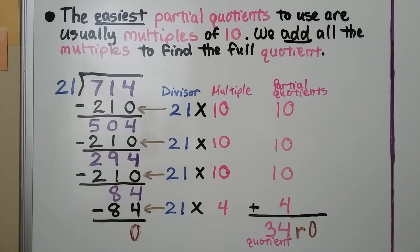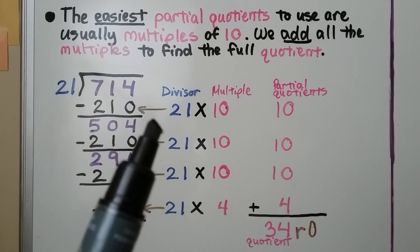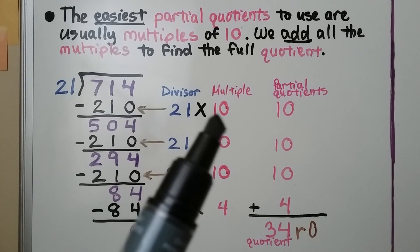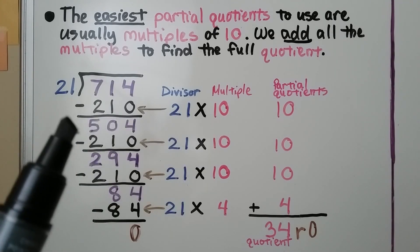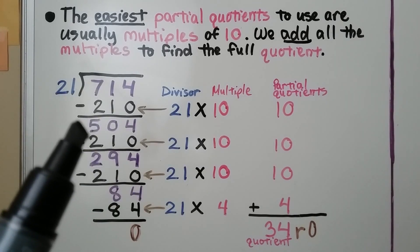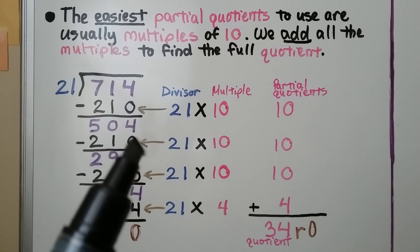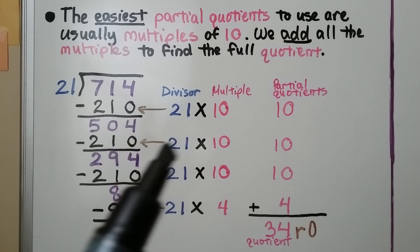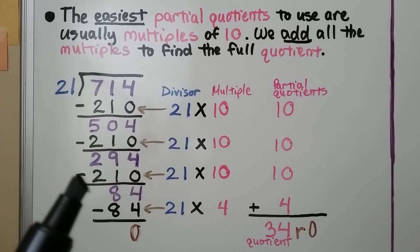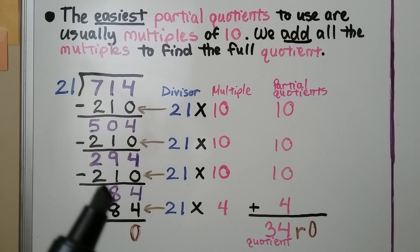Here we have 714 divided by 21. We use a multiple of the divisor. 21 times 10 is 210. We subtract it from the dividend and get 504. We subtract another 210 and get 294. We subtract another 210 and get 84.